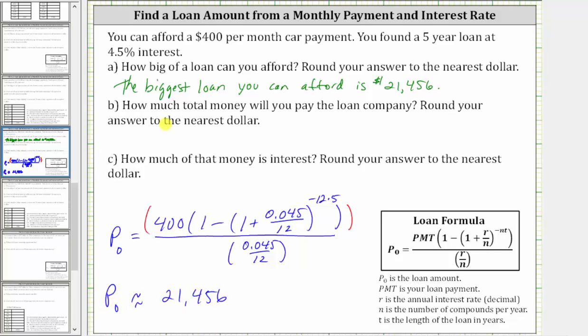For part B, how much total money will you pay the loan company? If you max out your loan, you will be paying $400 per month for five years. Therefore you pay the loan company $400 times the number of months in five years, which is five times 12. Five times 12 is 60, which gives us 400 times 60, which is $24,000.